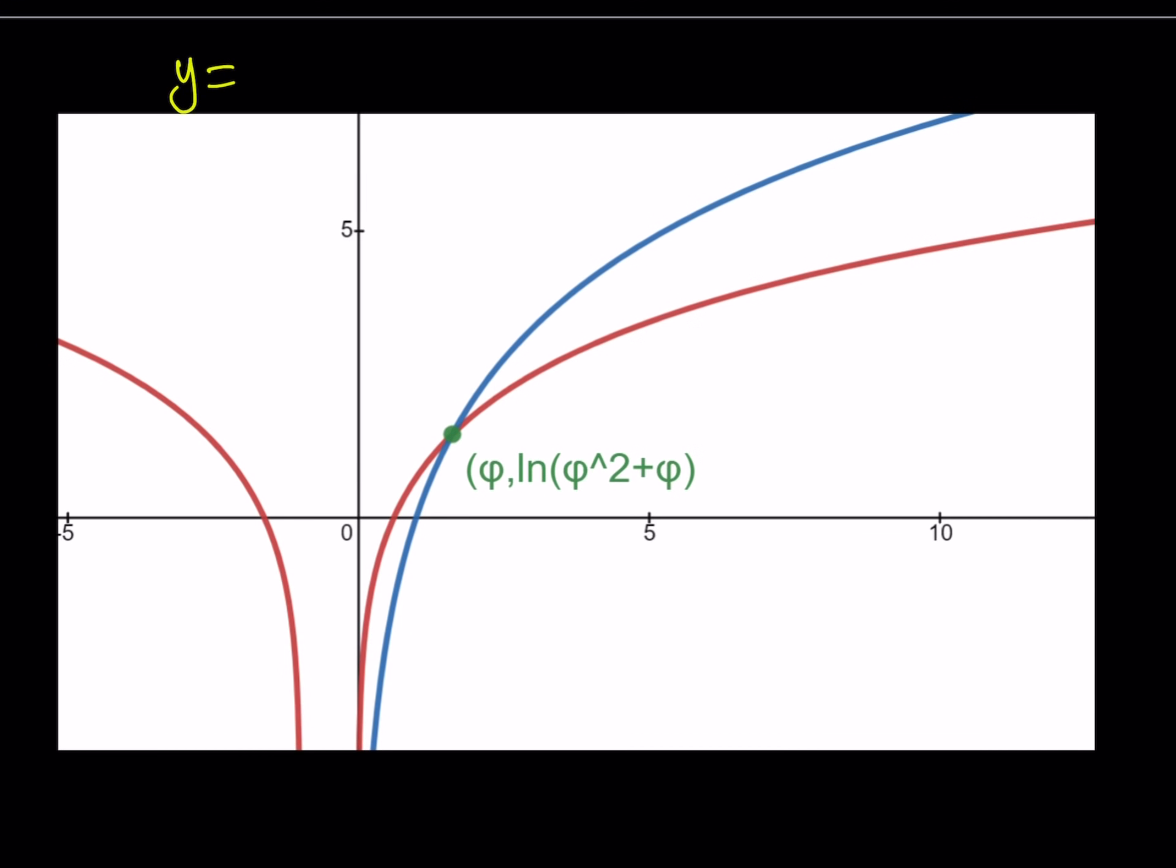What are those functions? One of them is y equals ln x squared plus x, which is the red one. And the other one is y equals ln x squared plus ln x, which we also wrote as ln x cubed, but x had to be positive. Just remember that condition. Okay. So these functions, these graphs will intersect.